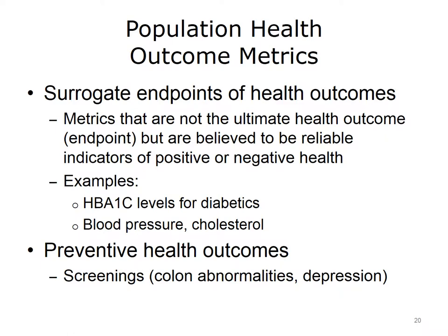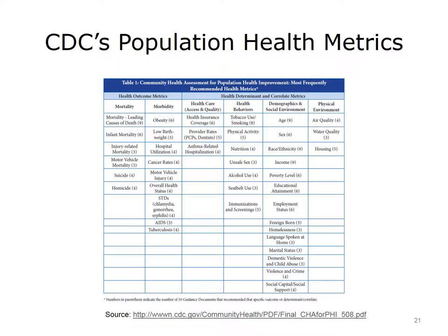Population health also highlights the role of prevention of negative health through screenings for various conditions such as colon abnormalities and depression. A list of metrics provided by the Centers for Disease Control (CDC) concerns population health, showing the most frequently recommended health metrics for community health assessments. These include health outcome metrics and health determinant and correlate metrics, categorized by mortality/morbidity, healthcare access and quality, health behaviors, demographics and social environment, and physical environment — such as obesity, low birth weight, health insurance coverage, tobacco use, race, and air quality.